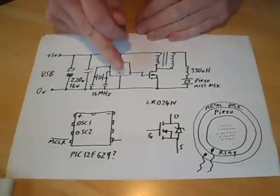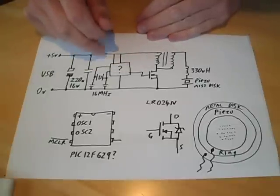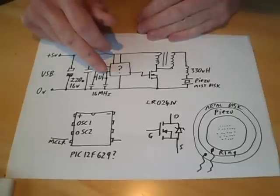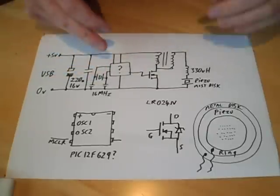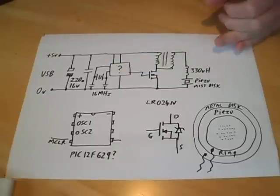Mystery chip, because it's got the number scrubbed off it, has a crystal, the 16 megahertz crystal, and the two capacitors associated with that, and then directly drives a transistor, an LR024N transistor.